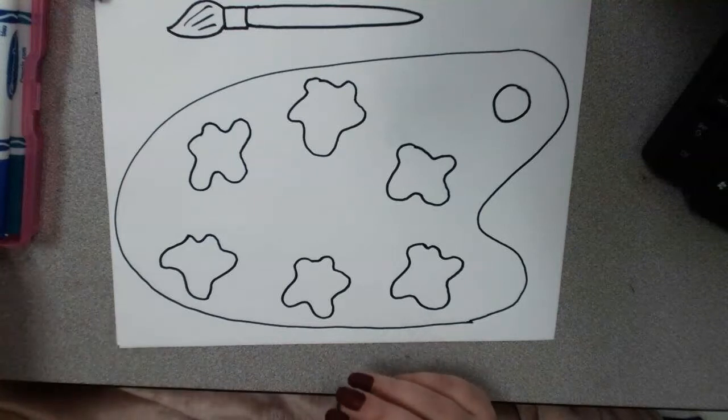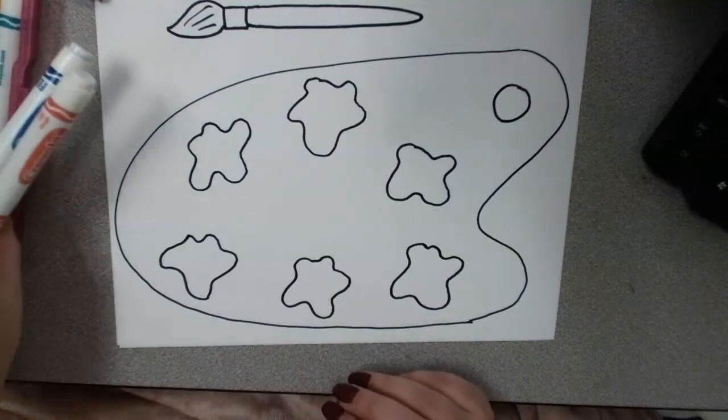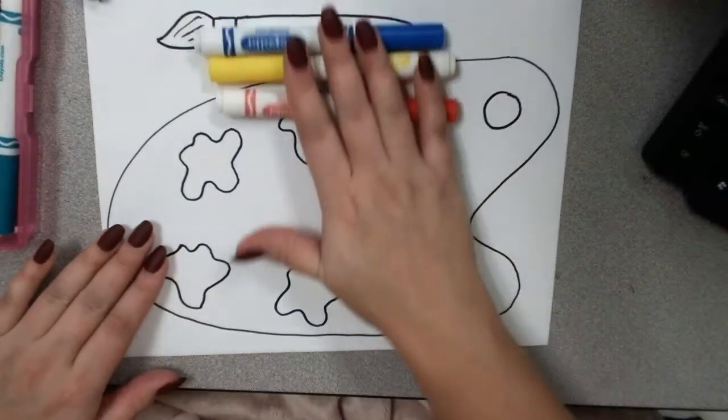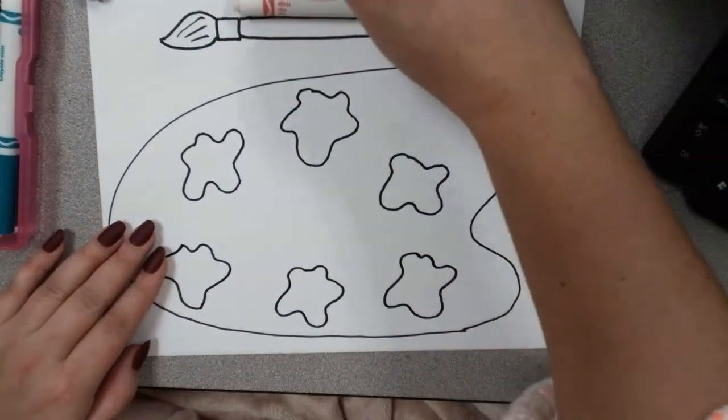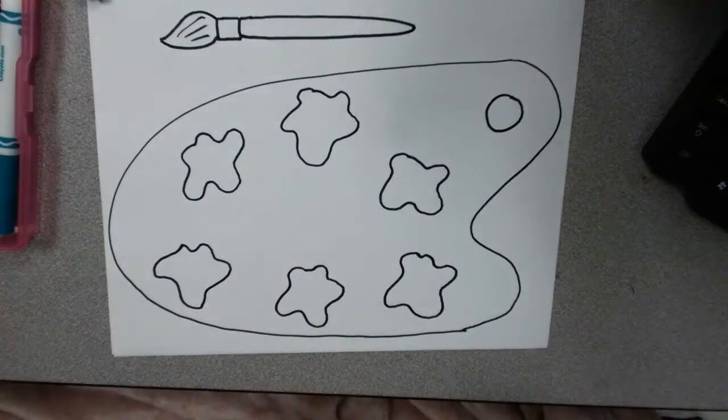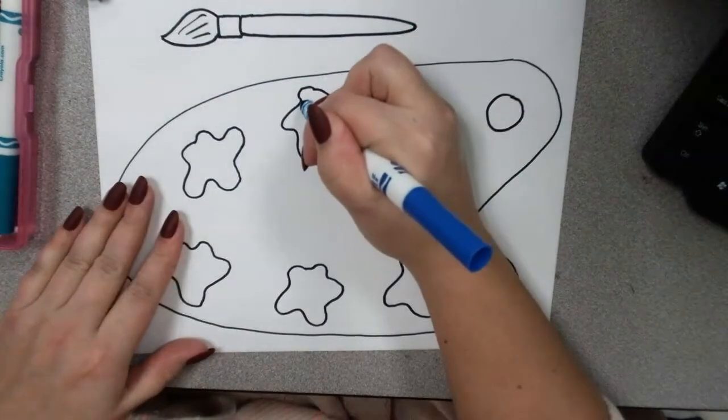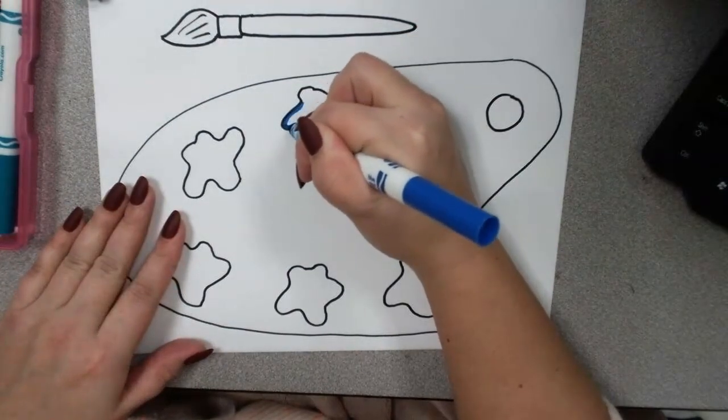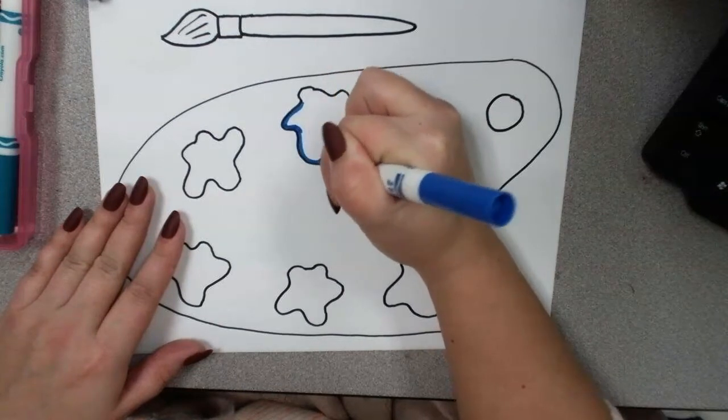If you said red, blue, and yellow, you are correct. So, now I have those markers ready to go. I'm going to start with blue. And color one of my paint splotches with the blue.